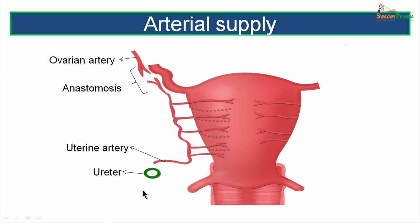An important relation: the ureter is present about 2 cm lateral to the isthmus part of the cervix, and the uterine artery crosses the ureter from lateral to medial side, traveling above and anterior to the ureter. This relation must be kept in mind — it is an important relation of the ureter.